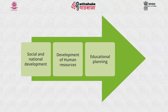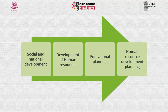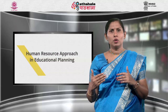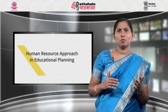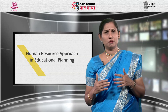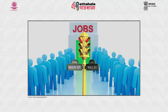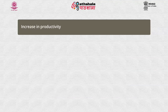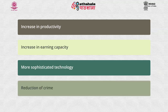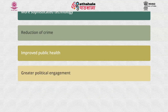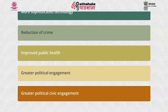Development of human resources is only possible through proper educational planning. When educational planning takes into account the human resources needed by the country, it follows the manpower or human resource development approach to manpower planning. Manpower is a variable and the requirement of manpower changes from time to time. Manpower planning aims at the production of more human resources in more demanding professions. Unemployment can occur due to improper manpower planning. Manpower planning relies on the fact that education must be linked with jobs. Some of the advantages are: increase in productivity, increase in earning capacity, more sophisticated technology, reduction of crime, improved public health, and greater political civic engagement.